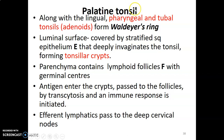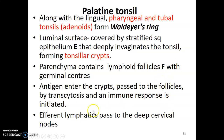Within the oropharynx, the palatine tonsils, pharyngeal tonsils, tubal tonsils, lingual tonsils, and the adenoids together form Waldeyer's ring. Histologically, palatine tonsils are lymphoid tissue covered by stratified squamous parakeratinized epithelium, which invaginates into the parenchyma forming tonsillar crypts. The parenchyma contains lymphoid follicles with pale-staining germinal centers and darkly staining mantle zones. Antigens enter the crypts, are processed by follicular immune cells, and efferents drain to the deep cervical lymph nodes.